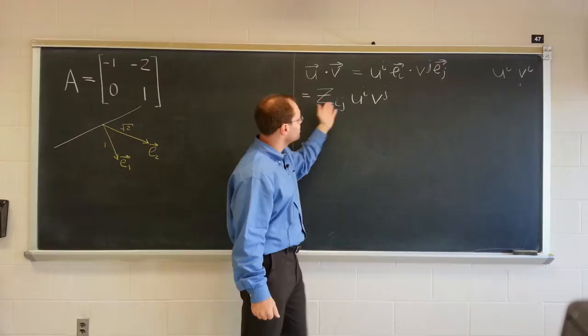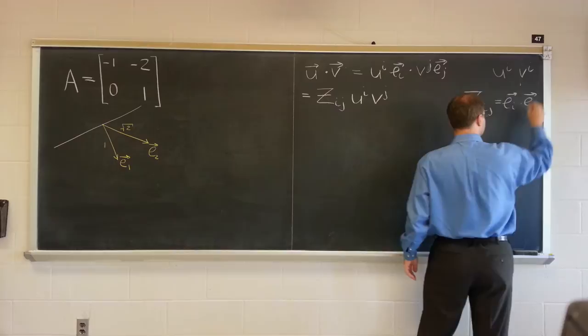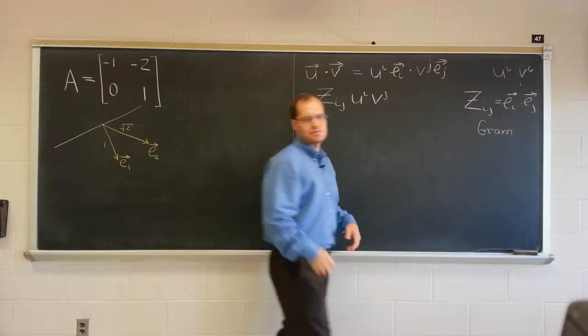But this is basically the matrix of pairwise dot products of the basis vectors equals ei dotted with e sub j. And of course it's also called the gram matrix and it's called the metric tensor and it's called the matrix representing inner products.